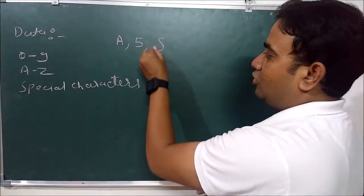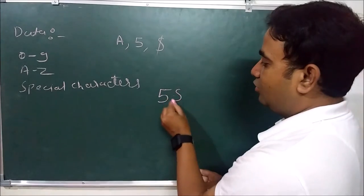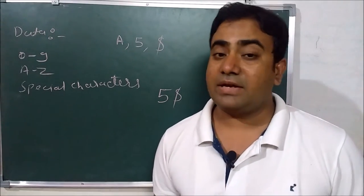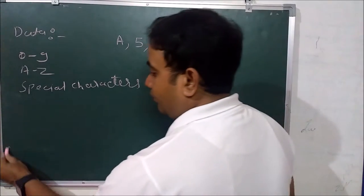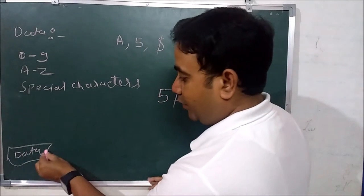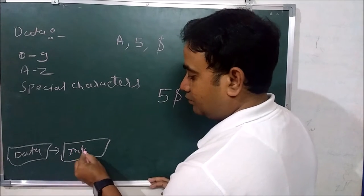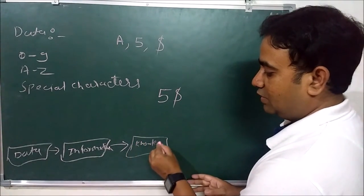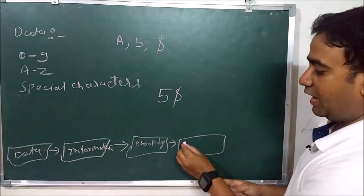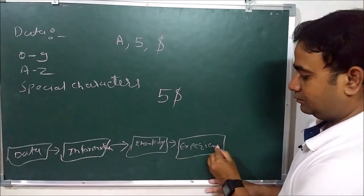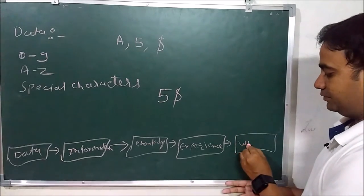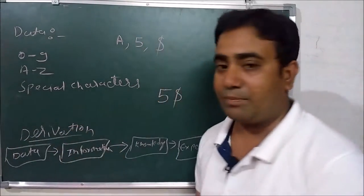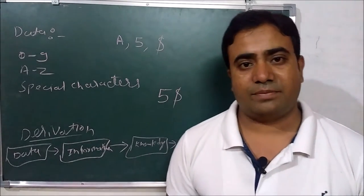When data is processed we get information. For example, if we have 5 and dollar, we get the information '5 dollars.' When information is processed we get knowledge, knowledge processed gives experience, and experience processed gives wisdom. This is the derivation of data processing.